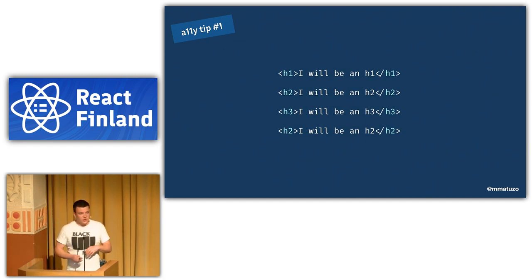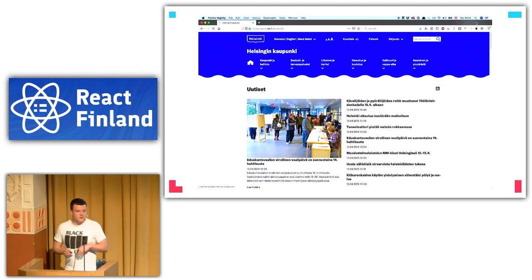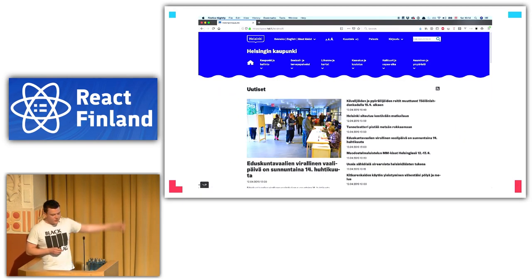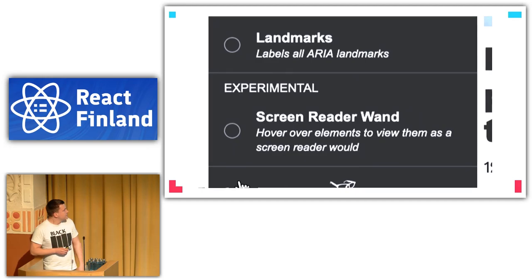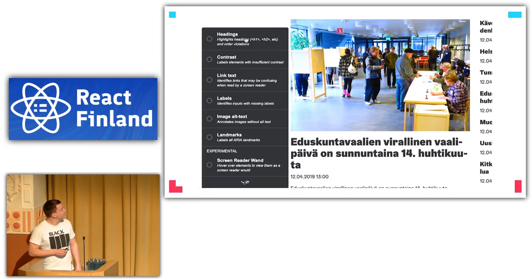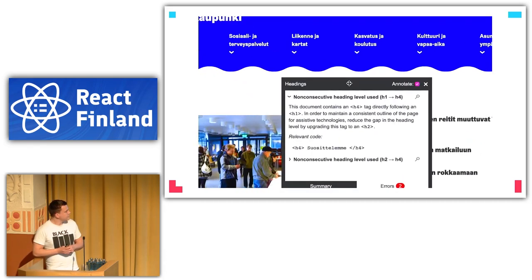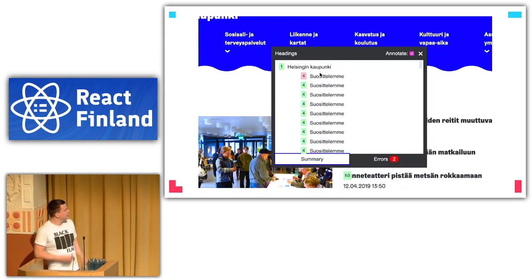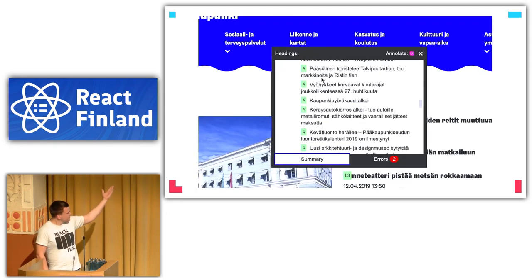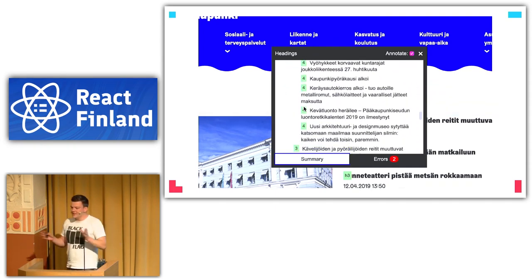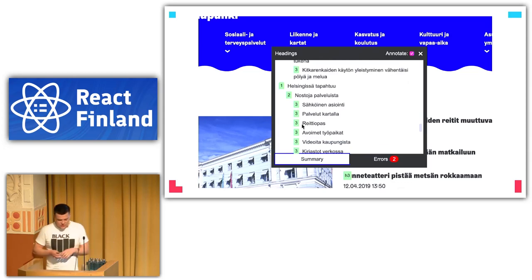There are different ways of testing the document outline. One of my favorites is a browser extension called Tota11y. Click its icon and it will annotate headings, show errors in your document outline, and list all headings so you can see your page structure. You can see on this website it starts with an h1, then there are h4s, an h2 followed by an h4 — a nice way to spot structural issues.